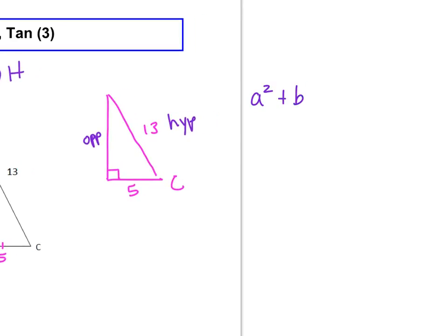and you knew two other ones, you could use the Pythagorean theorem. We're just going to fall back on a squared plus b squared equals c squared. Remember, the c has to be the hypotenuse, so that's where the 13 goes.